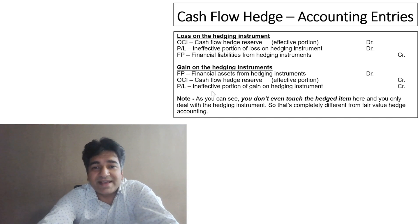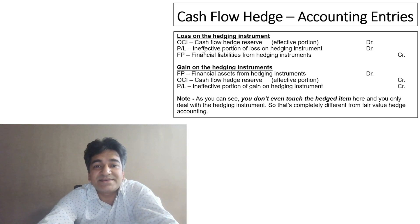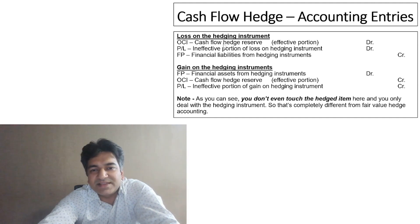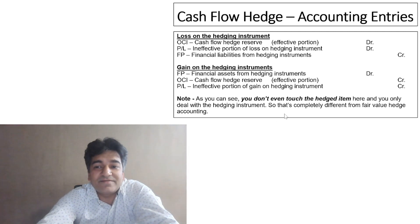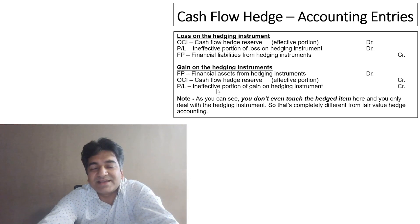As you can see, in cash flow hedge accounting we only consider the gains or losses on the hedging instrument — we have not touched the hedged item. This is completely different from fair value hedge accounting, where we account for gains or losses on both the hedged item and the hedging instrument.